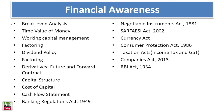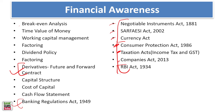Break-even point is not very relevant. Time value of money, working capital, factoring, and dividend policy go quite deep. Derivatives are important. Banking Regulation Act is important. Negotiable instruments and FEMA currency are relevant. Consumer protection may not be necessary. RBI Act is important.